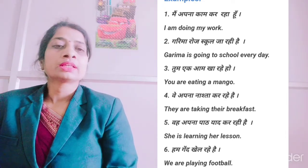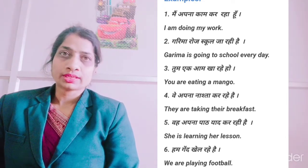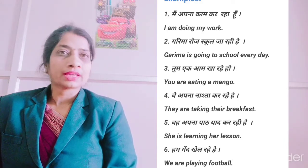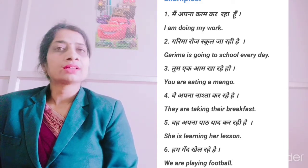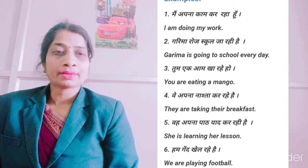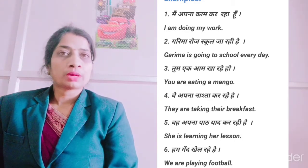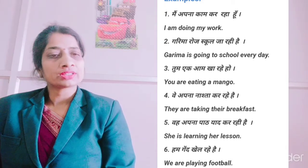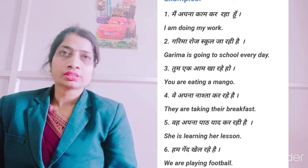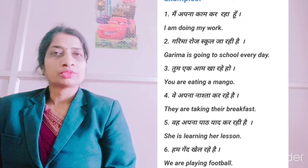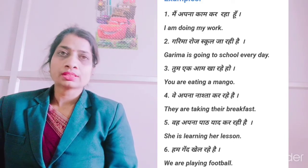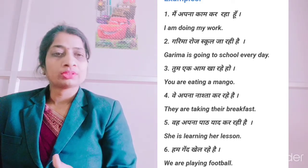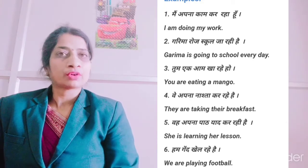Dekho ki 'I' jo hai, that is subject. Aur I ke saath mein is, am, aur are mein se hum am use karte hai — toh wahaan am hai. 'Do' aapka verb hai — ismein humne ing add kar diya — and then 'work' is the object. So subject plus is/am/are plus ing form of verb plus object — yehi in sentences mein humne follow ki hai.